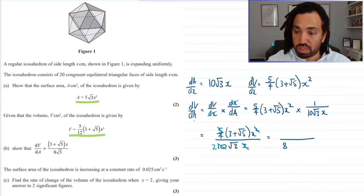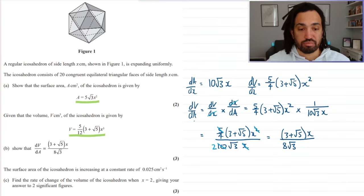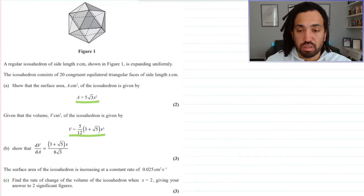Okay, great. Give me 8 on the bottom root 3. And on the top, I will get 3 plus root 5 x. Okay, yeah, perfect.